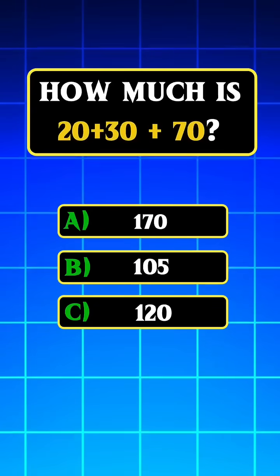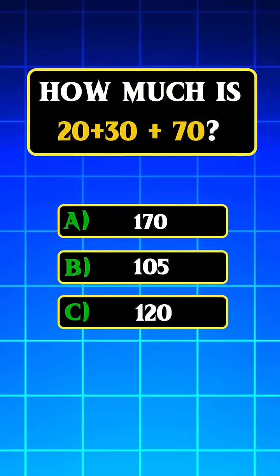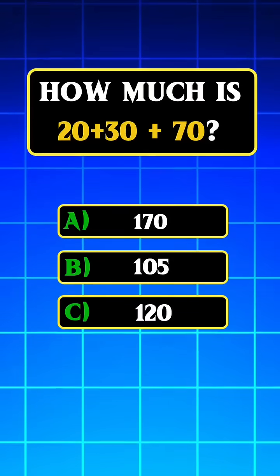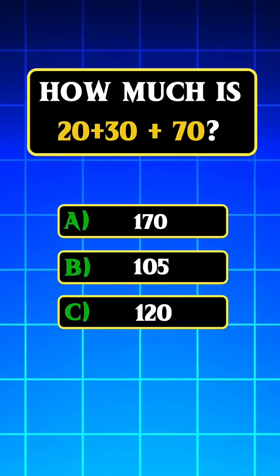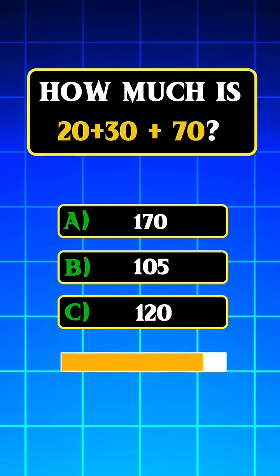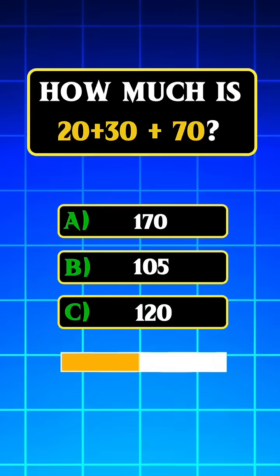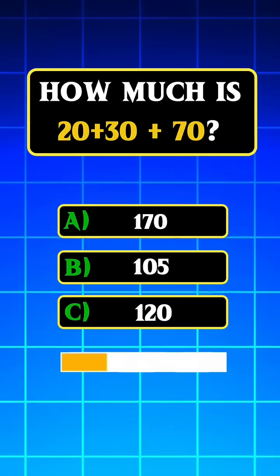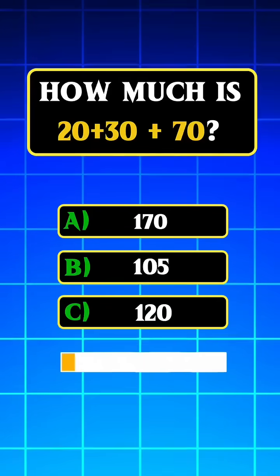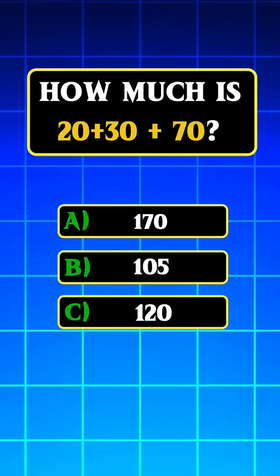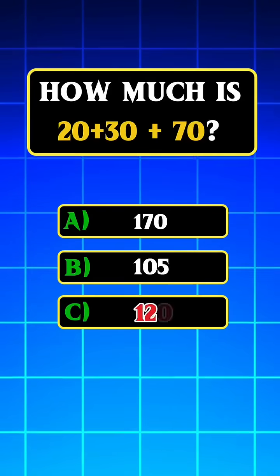Question 2: How much is 20 plus 30 plus 70? Answer C: 120.